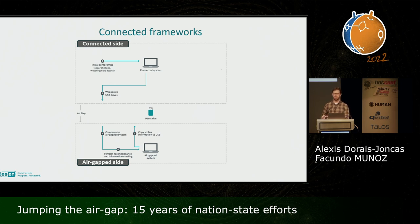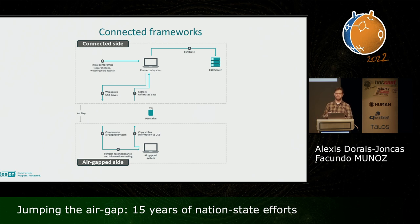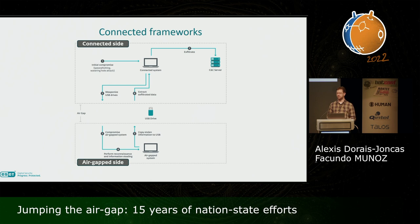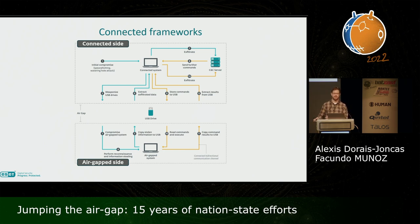That's the exfiltration part from the air gap system, but that's not enough — the data still needs to reach the attacker. The drive containing the data needs to be connected again on the connected system, and the malware running there will automatically extract the data and relay it back to the attacker via the internet through some sort of C2 protocol. All these steps take place automatically without any intervention from the attacker. Some frameworks are hard-coded like that.